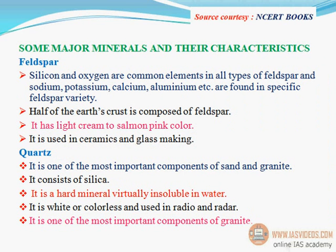Some major minerals and their characteristics: Feldspar — silicon and oxygen are common elements in all types of feldspar, and sodium, potassium, calcium, aluminium etc. are found in specific feldspar varieties. Half of the earth's crust is composed of feldspar. It has a light cream to salmon pink color and is used in ceramics and glass making.